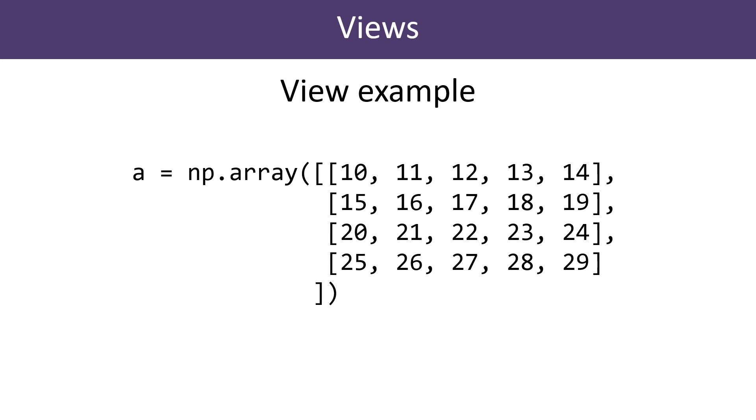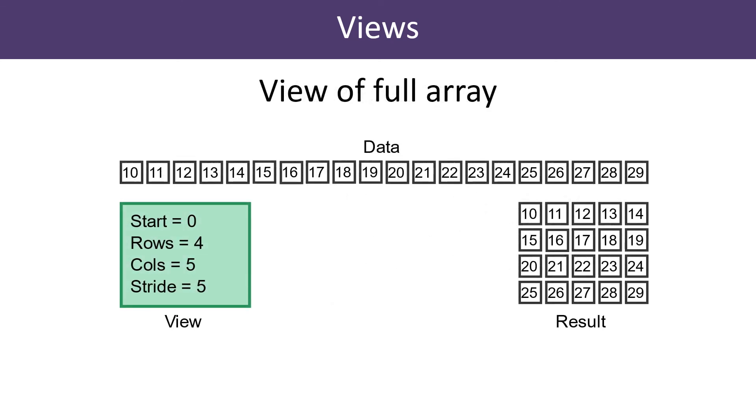This section describes the basic concept of views. It isn't intended to describe exactly how views are implemented within NumPy. Here is how the data might be stored in memory. There are twenty elements in the array, and NumPy stores them as a single list in twenty locations, one after the other.